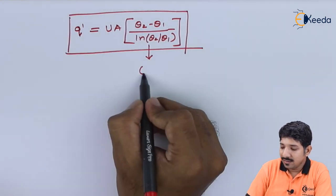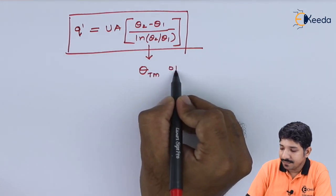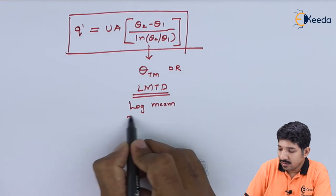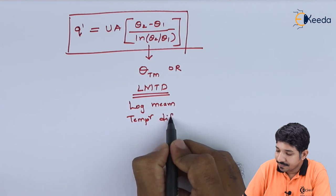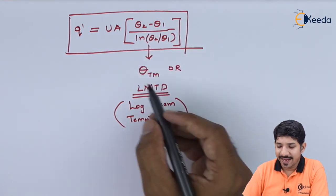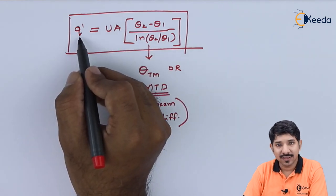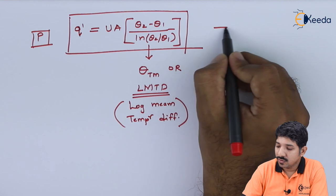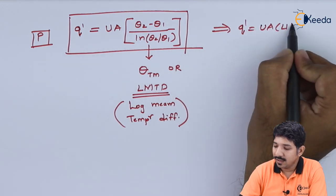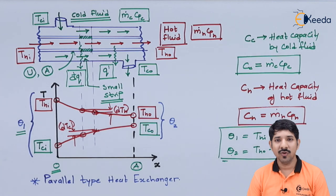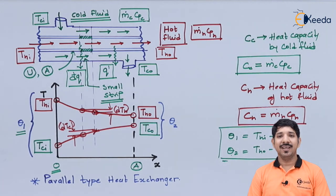This term (theta 2 − theta 1) / ln(theta 2 / theta 1) is what is called theta_m or LMTD — the log mean temperature difference. So if we know the LMTD, and the values of U and A, we can easily find the heat transfer rate Q = U × A × LMTD. This expression is derived specifically for parallel flow heat exchangers. Thank you for watching.